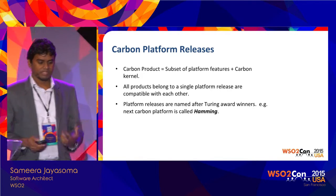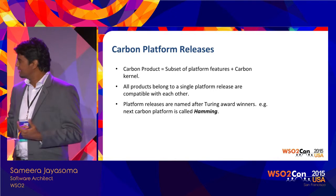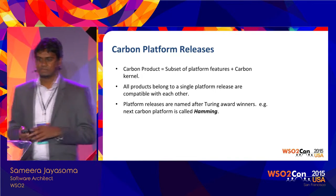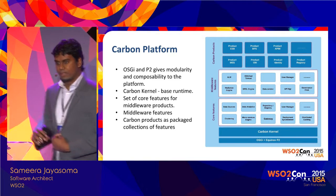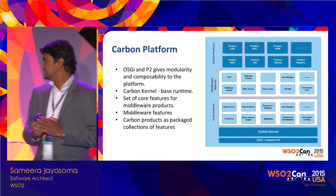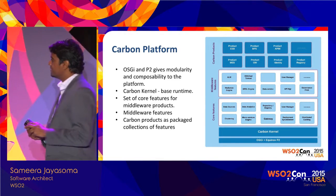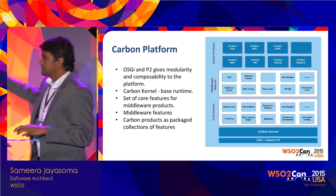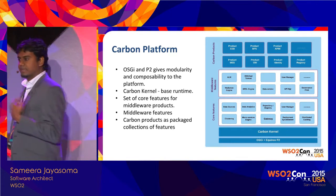From Carbon 4.2 we started naming our platforms after Turing Award winners. Carbon 4.2.0 was the Turing platform, 4.4.0 was Wikis, and 5.0 we call the Hamming release — Carbon Hamming platform — that's our internal code name. At a high level, the Carbon platform uses OSGi and P2: OSGi gives us modularity, dynamism, and composability, while P2 gives us a way to package OSGi components into one product. On top of OSGi we have a lean Carbon kernel with basic features to make component development easier.